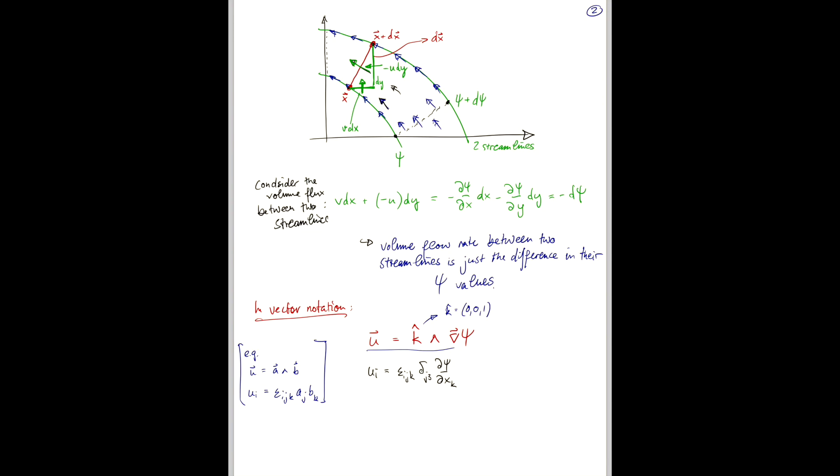So, in order to do the contraction between jk and delta j3, we have to permute the indices here. So, that means if you permute j and k, you pick up a minus sign. So, it's minus epsilon ikj delta j3 d psi dxk. And now you can contract that. And that just means that the j here turns into a 3.